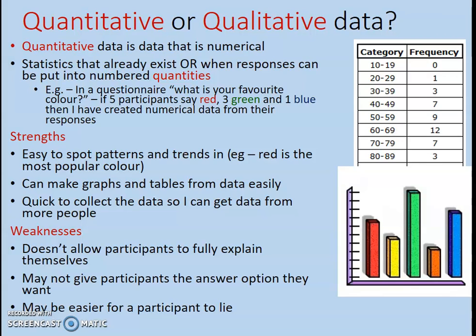However, weaknesses of quantitative data include that responses converted into numbers can be quite limited and don't really allow participants to fully explain themselves. For example, asking 'How are you feeling on a scale of one to five?' doesn't let someone explain the full context of their day. It also might not offer the answer option a participant wants — if indigo isn't listed as a colour, they might tick blue even though they don't mean blue. Some argue it's easier to lie in this type of research since you're just answering short tick-box questions without explaining yourself, which can affect the validity of the study.